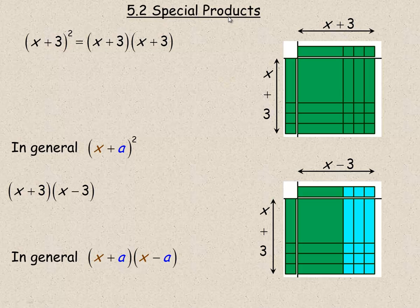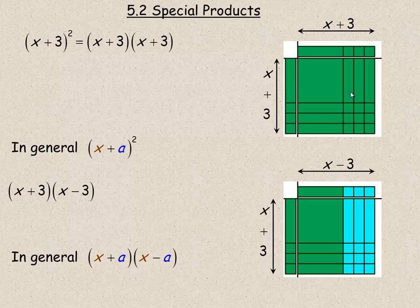In this video, we'll take a look at what are called the special products, and there's two of them. The first one is when you're squaring a binomial. So x plus 3 is a binomial, and we're squaring it, which means x plus 3 times another x plus 3. I'm going to model both of these special products with algebra tiles on this page, and then we'll take a look at some examples on the next two.